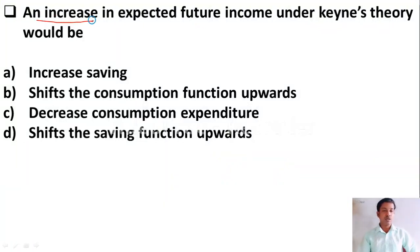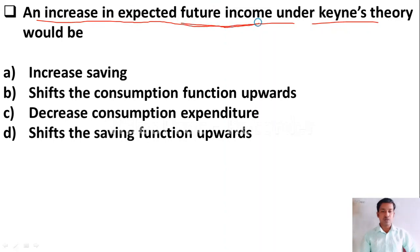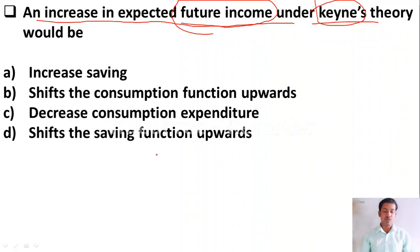The first question is: when people are expecting an increase in their future income, what will happen under the Keynesian theory? Option A: increase savings. Option B: shift the consumption function upward. Option C: decrease consumption expenditure. Option D: shift the saving function upward.